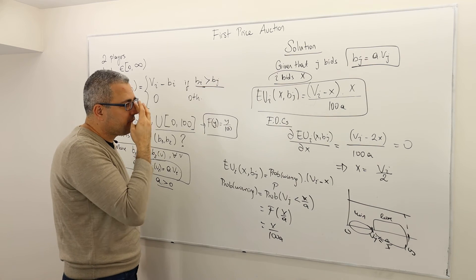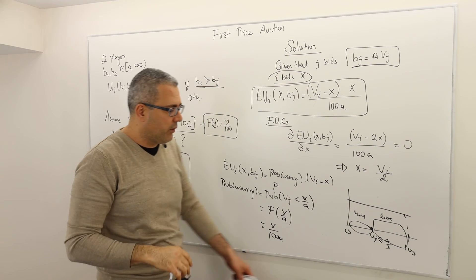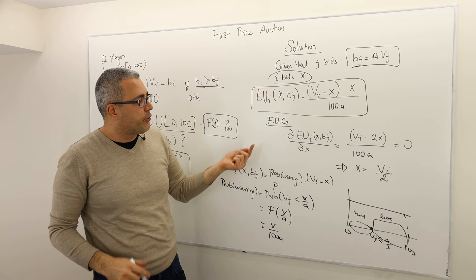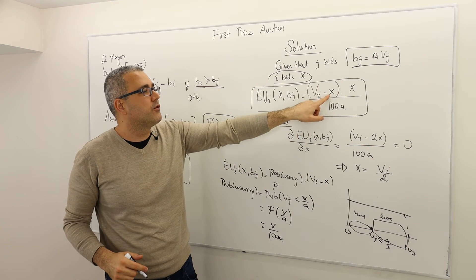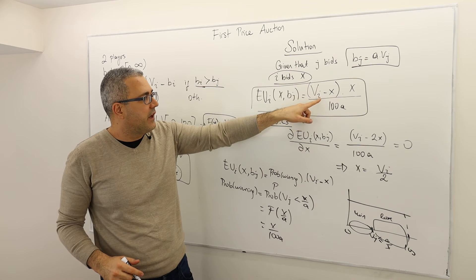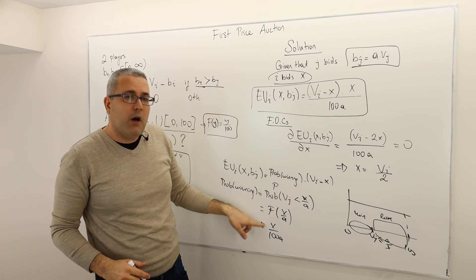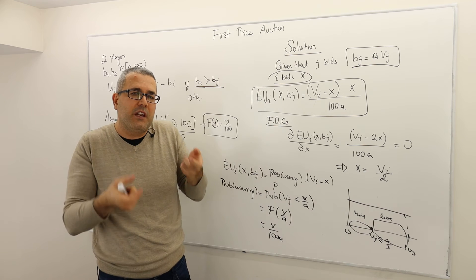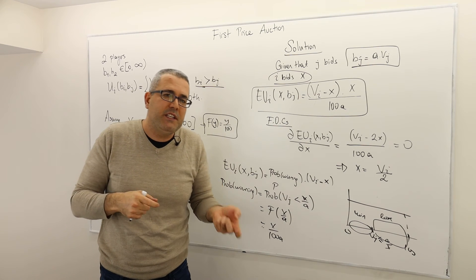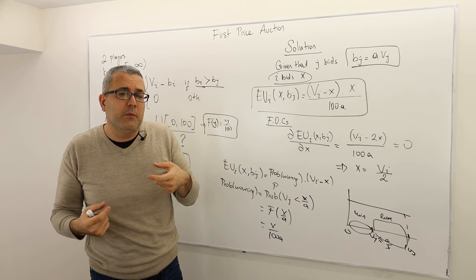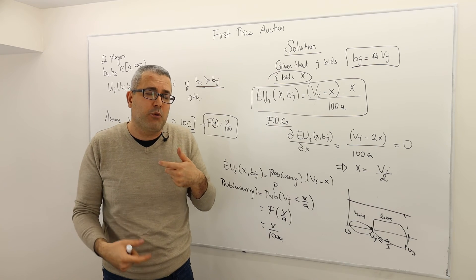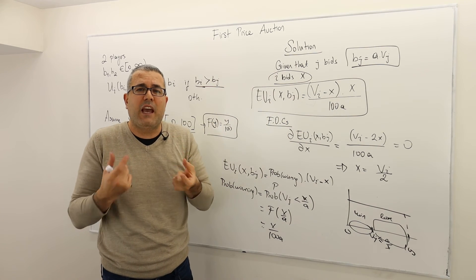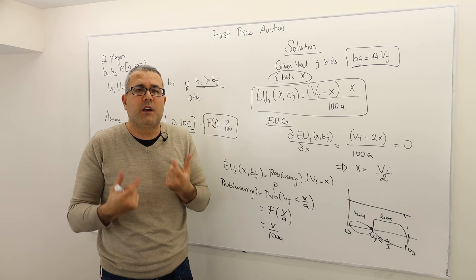Be careful: since X is the price I pay, I'd like to decrease X, but as I decrease X my probability of winning also decreases. So there is a trade-off — I want to decrease X, but not too much, because that decreases my probability of winning. This expected utility captures that trade-off.